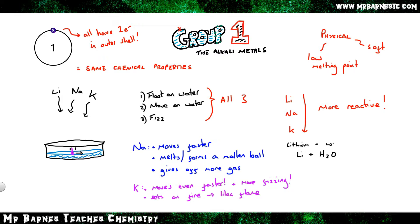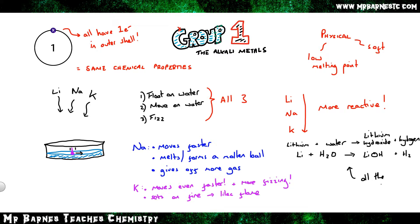For the word and symbol equations: lithium (Li) plus water (H₂O) gives lithium hydroxide (LiOH) plus hydrogen gas (H₂) — remember it's diatomic. This equation is exactly the same regardless of which group 1 metal you use. So sodium (Na) plus water gives sodium hydroxide (NaOH) plus hydrogen, and the same applies for potassium and all other group 1 metals.